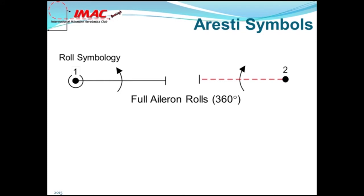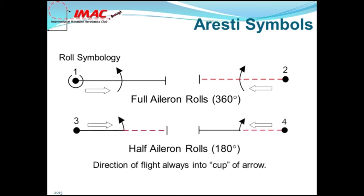Let's continue with roll symbology. A full 360 aileron roll is indicated by a cupped arrow drawn symmetrically across the line. The direction of flight will always be into the cup of the arrow. It's the pilot's option to fly this roll either left or right. Half, or 180 degree aileron rolls, are drawn as an arrow beginning at the line. Note that the attitude of the plane would change from positive to negative, or negative to positive, as shown in figure four.